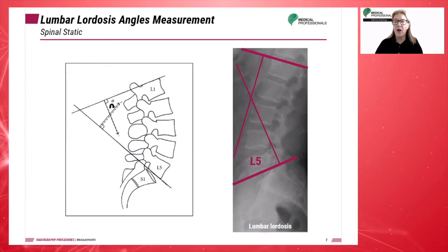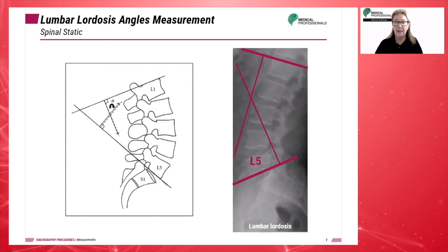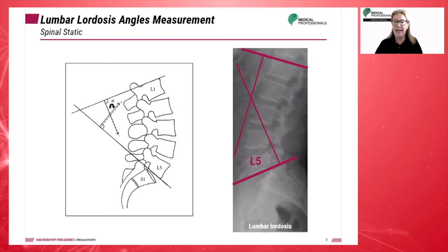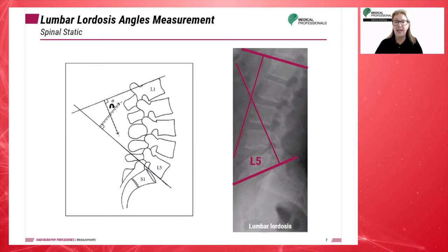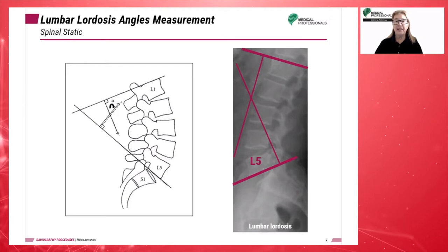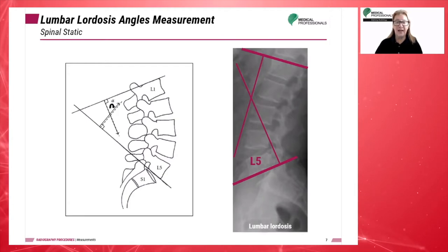We talk about excessive lordosis, or EL, when the angle is over 75 degrees; normal lordosis, or NL, when the angle is 40 degrees; hypo lordosis, or HL, when the angle is 20 degrees; and lumbar kyphosis when the angle is 5 degrees.